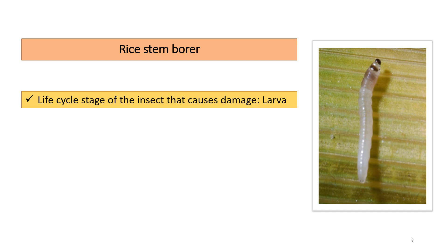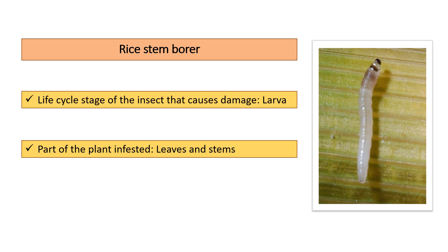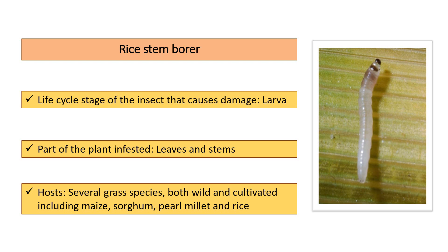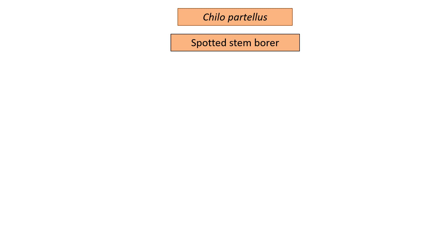The life cycle stage of the insect that causes damage is larva. Parts of the plant infested are leaves, stems, and panicles. They attack a wide range of hosts including several grass species, both wild and cultivated, such as maize, sorghum, pearl millet, and rice crops. This presentation will mostly focus on Chilo partellus.